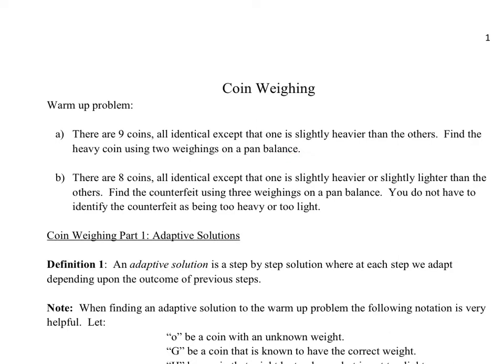If you solve that one right away, take a look at the next one. I want you to try these problems on your own before we discuss the solutions. This time there are just eight coins. Again, they're all identical, except that the counterfeit coin is either slightly heavier or slightly lighter. We're going to try to find that counterfeit using a pan balance. This time we have three weighings instead of two. You don't have to specifically identify the counterfeit as being too heavy or too light — just find it. Pause the video now, give these problems a try, and then we'll build some theory towards their solutions.